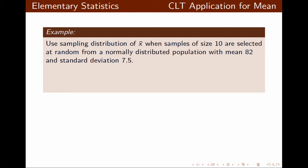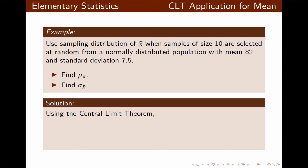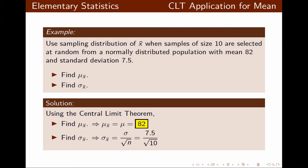In this next example, we have a sampling distribution of X bar with sample size 10 from a normally distributed population with a mean of 82 and a standard deviation of 7.5. We want to find the mean of the means and the standard deviation of the means. Using the central limit theorem, the mean of the means is 82, and the standard deviation of the means is 7.5 divided by the square root of 10, which is approximately 2.372.